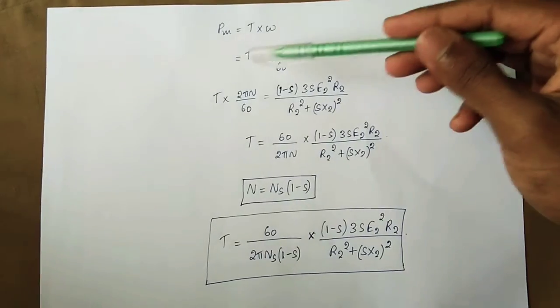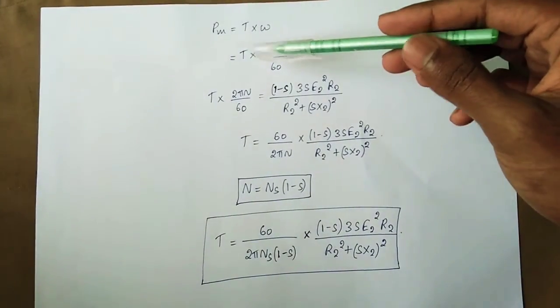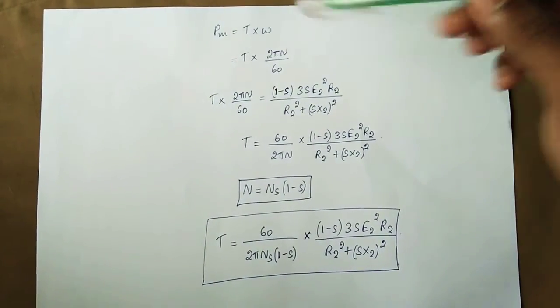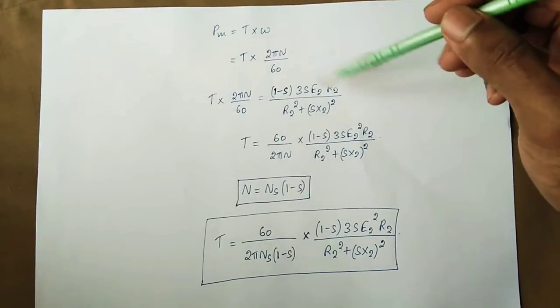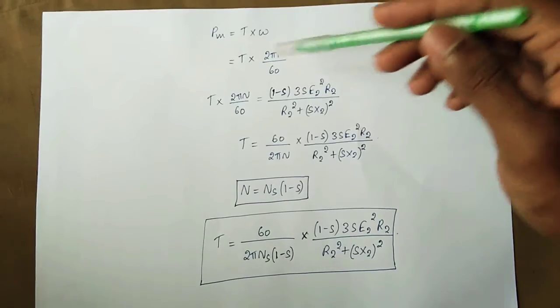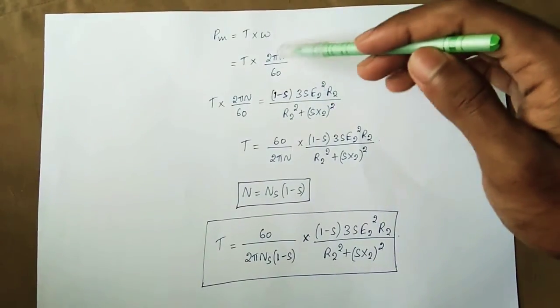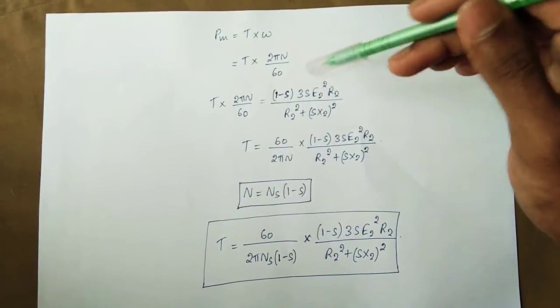The mechanical power developed Pm equals torque multiplied by angular speed omega, which equals torque multiplied by 2πN/60.